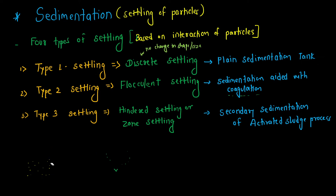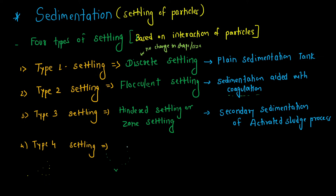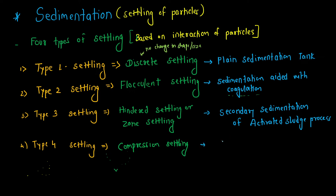The last one is Type 4 settling. This type of settling is called compression settling. We find compression settling in the secondary sedimentation tank of the trickling filter.